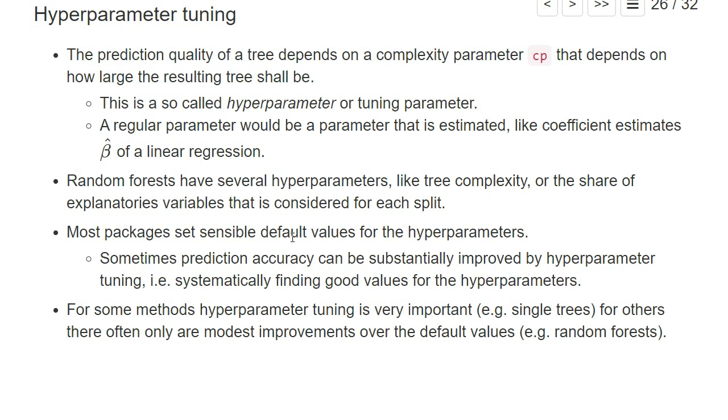Most packages set some default values for the hyperparameters, and for some methods it really doesn't matter too much to change it. For example, typically with random forests, the default hyperparameters are pretty good. But for other methods, for example for single trees, it's very important that you search yourself for good values of these hyperparameters. For these methods, hyperparameter tuning can really improve substantially the prediction accuracy of your model.